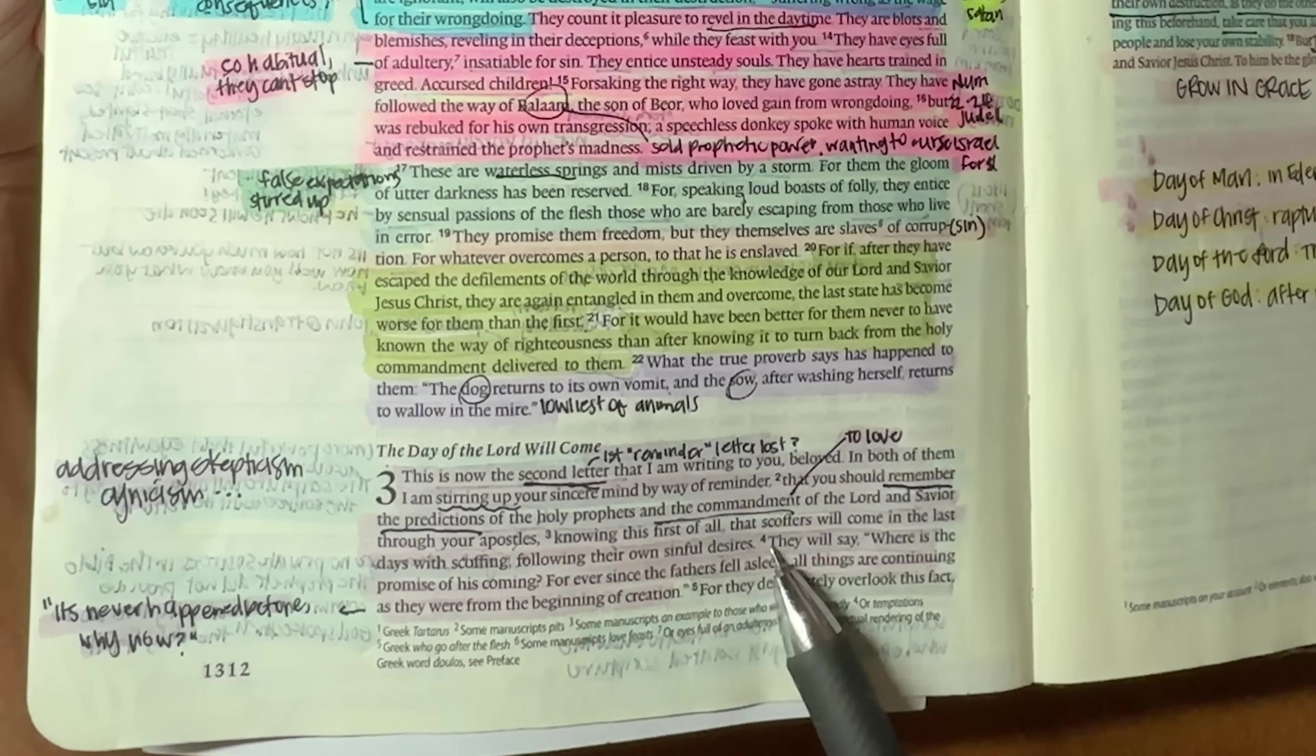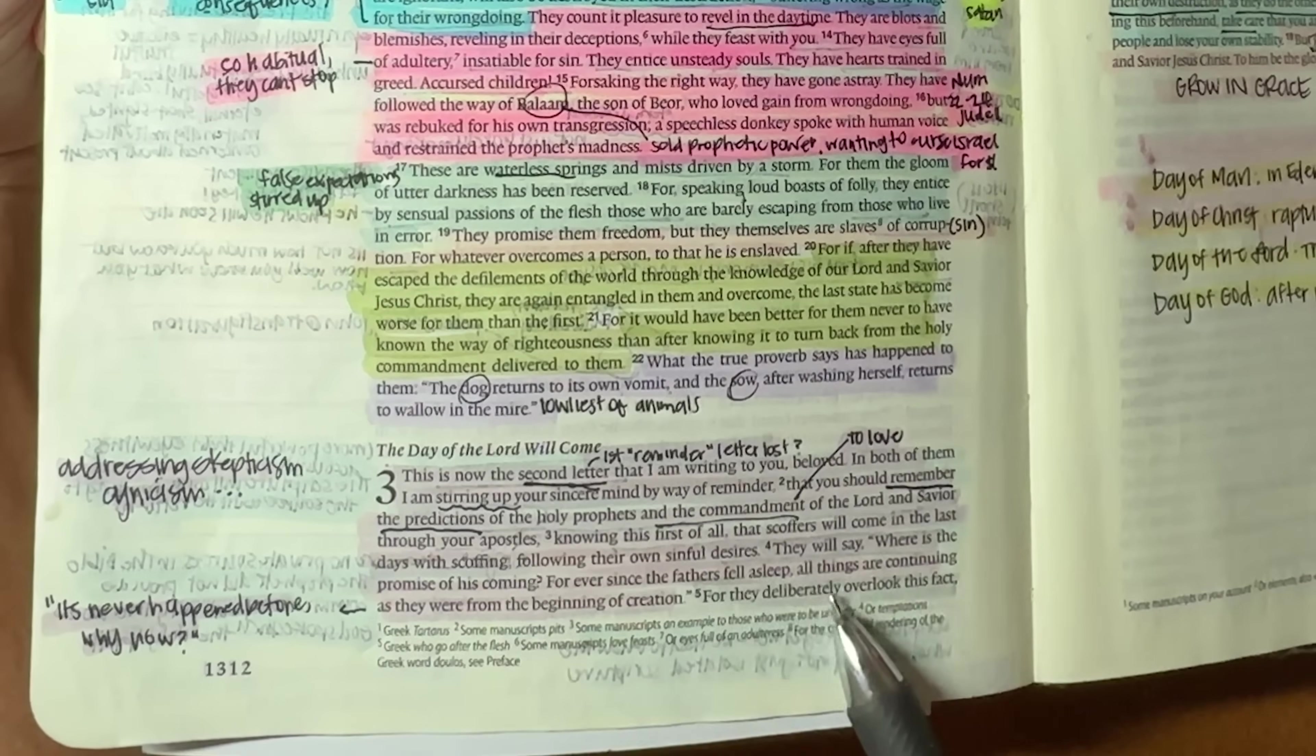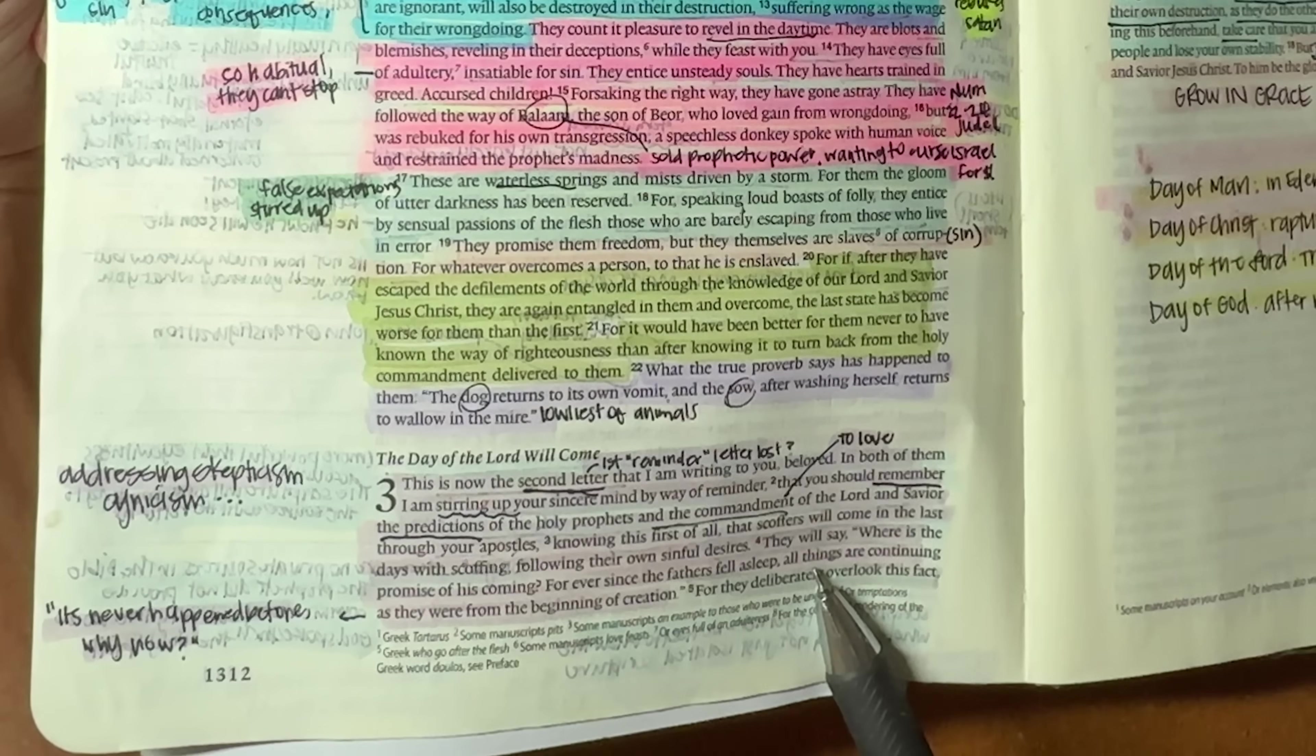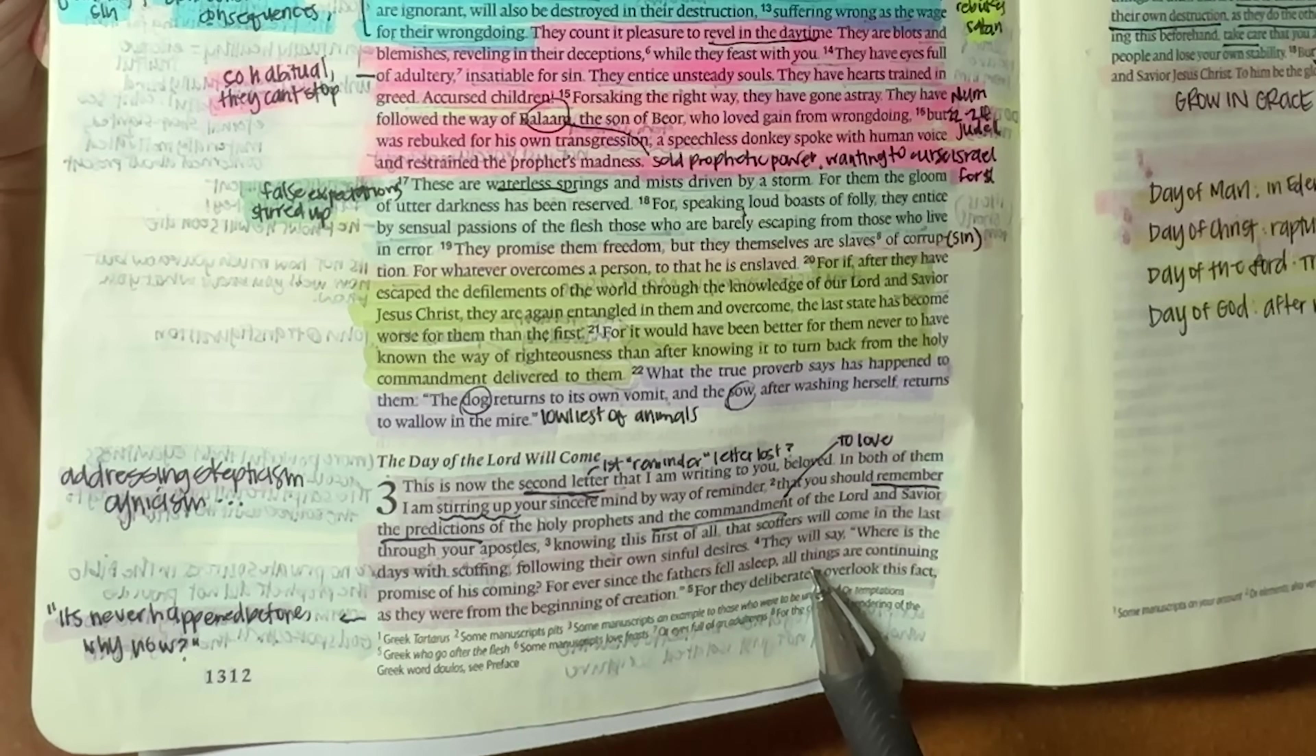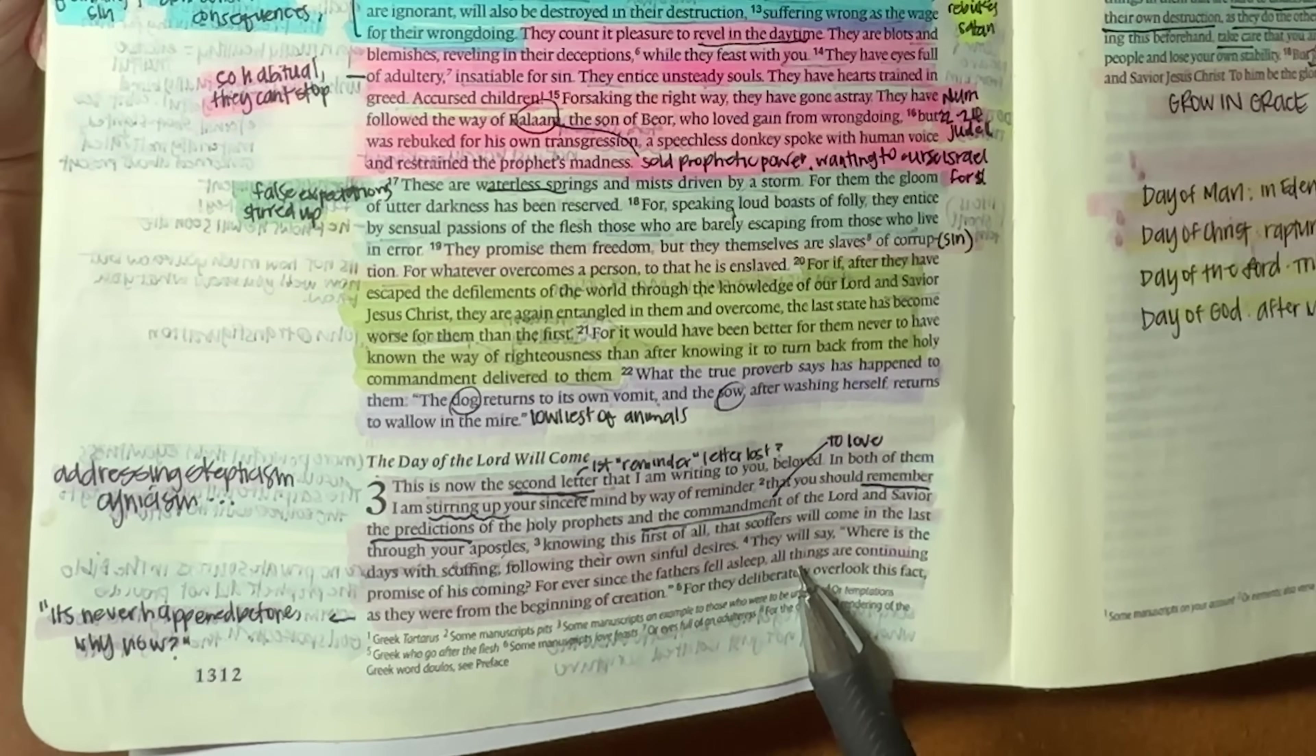Knowing this, first of all, that scoffers will come in the last days with scoffing, following their own sinful desires. They will say, where's the promise of his coming? For ever since the fathers fell asleep, all things are continuing as if they were from the beginning of creation. So basically like, hello, you said Jesus was returning. He hasn't yet. So why are you even still expecting it to happen? It's never happened before. Why will it happen now?